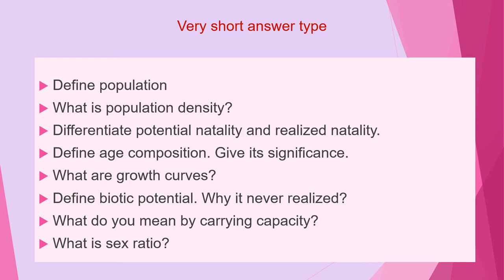The first question of this category is: define population. Second is: what is population density? Third question is: differentiate potential natality and realized natality. Next question is: define age composition and give its significance. Next question is: what are growth curves? Next question is: define biotic potential. Why is it never realized? Next question is: what do you mean by carrying capacity?